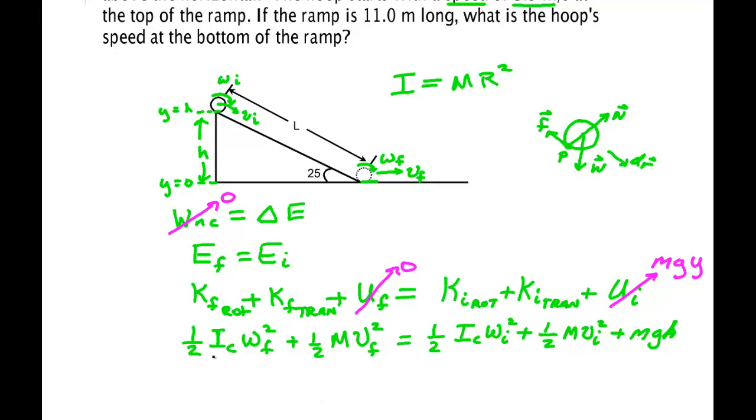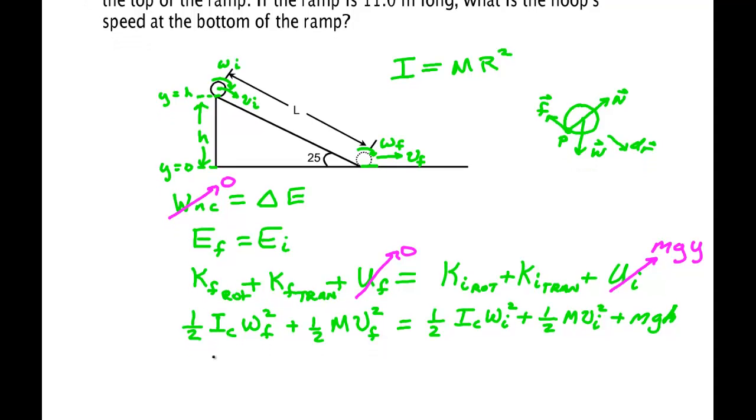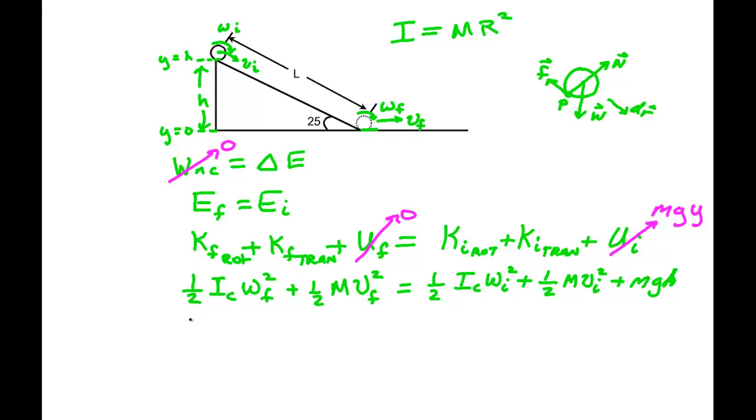Now what I want to do is I want to replace the I's with the value we have for our moment of inertia, which is MR squared. So I get one half M, and I'm going to put that R with this Omega F. So there's R squared Omega F squared, plus one half M, V_F squared, is equal to one half M, R Omega I squared, plus one half M, V_I squared, plus M, G, H. And we can see that we can cancel the mass of the object.